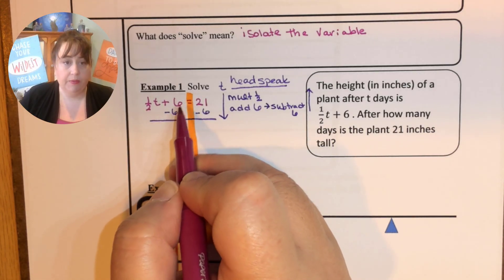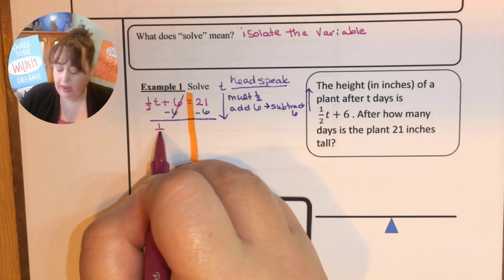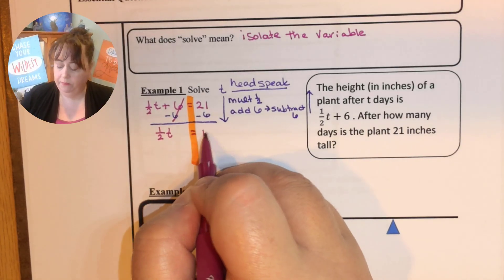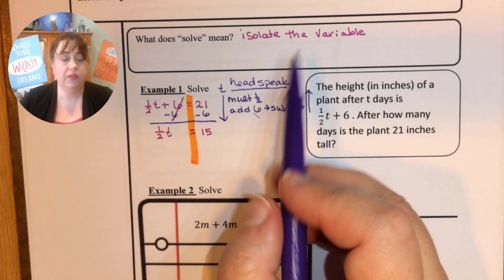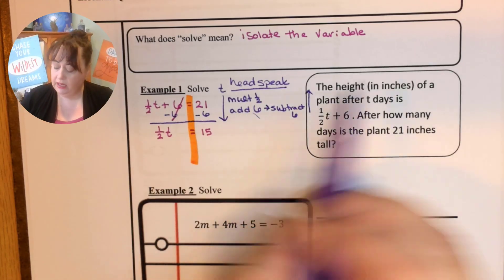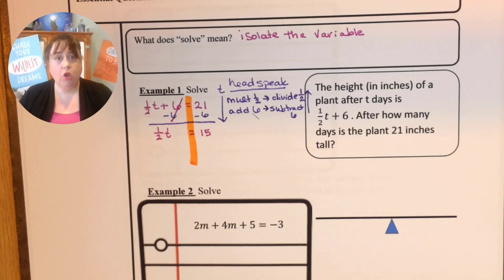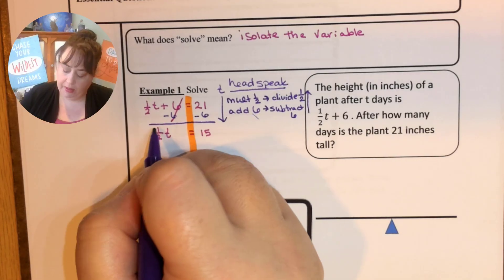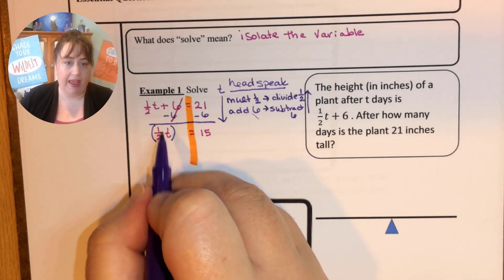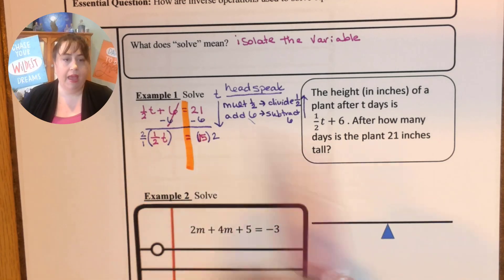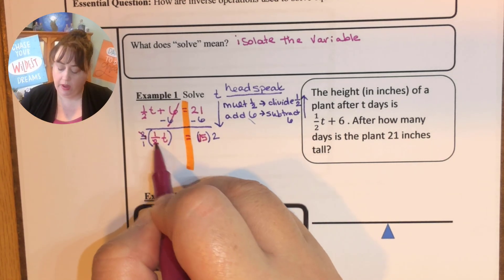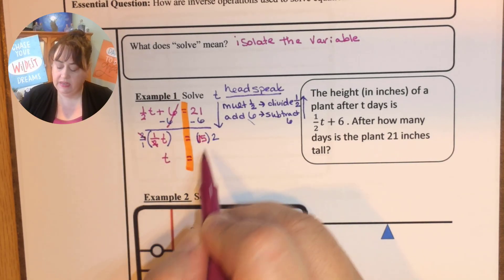So six minus six is zero. We have one half t is equal to 15. And then we come back to our head speak and we see that we have multiplying by one half. So the inverse operation of multiplication is division and we're going to divide by one half. But we have to go back to understanding fractions now. And we know that when we divide by a fraction we really multiply by the reciprocal. So we are going to multiply by the reciprocal of one half which is two over one or just two. So now we have two over two which is one. So we're left with t and 15 times two which is 30.